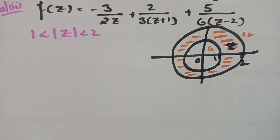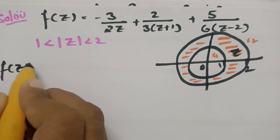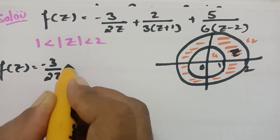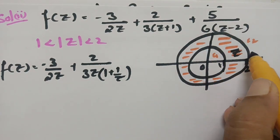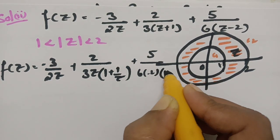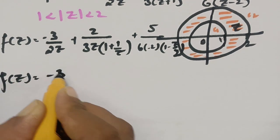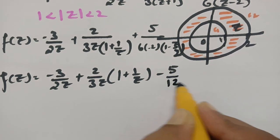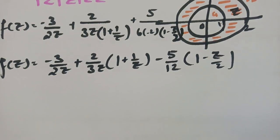For 1 < |z| < 2: among z and 1, z is bigger, so take z common from (z+1) giving z(1 + 1/z). Among z and 2, 2 is bigger, so take -2 common from (z-2) giving -2(1 - z/2). So f(z) = -3/(2z) + (2/3)·(1/z)(1 + 1/z)⁻¹ - (5/12)(1 - z/2)⁻¹.